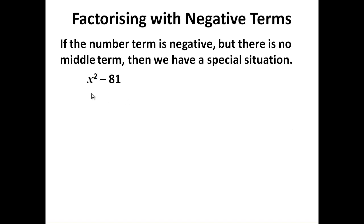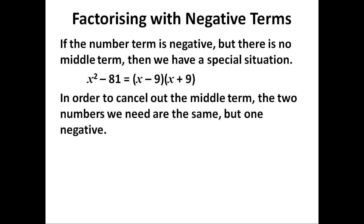If we have one like this where we have the x squared and the number but no middle term, it's still a quadratic. It's just that the two factors cancel out. Because 81 is 9 times 9. Positive times negative is negative. But minus 9 plus 9 is 0. So that cancels out in the middle.